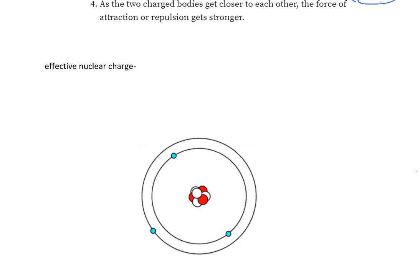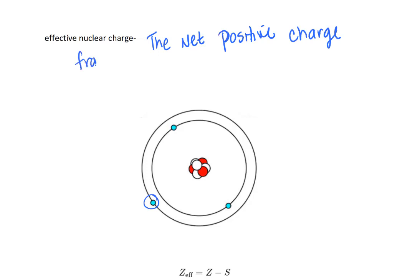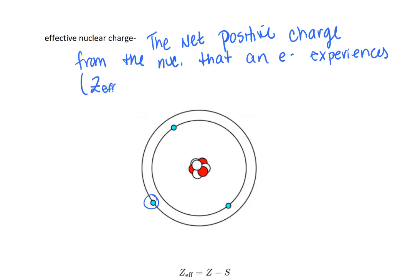One way that we look at these kinds of relationships is when we consider an atom. Here I have a Bohr model of lithium, with core electrons and valence electrons. Remember, the valence electrons are the outer electrons — those are the ones we really care about when it comes to bonding. So what we're going to calculate is the effective nuclear charge, which is the net positive charge from the nucleus that an electron experiences. We're usually calculating this for the valence electrons, abbreviated as Z-effective.